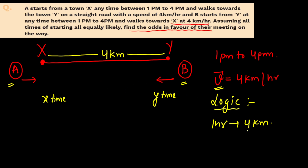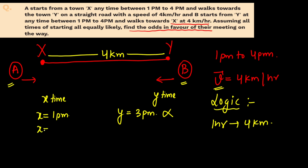Let's focus on the logic. If A leaves at 1pm and B leaves at 3pm — is this a possible combination? I don't think so, because A starts at 1pm and needs one hour to reach Y, since in one hour he travels 4km which is the distance between the towns. So this combination is not possible.